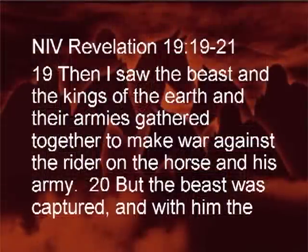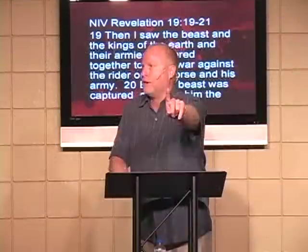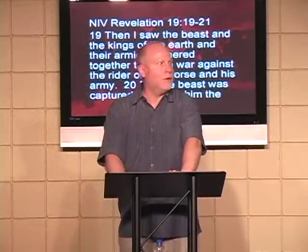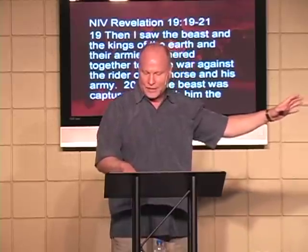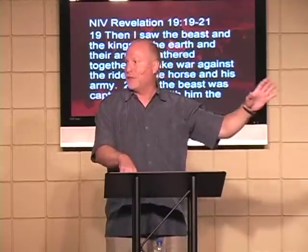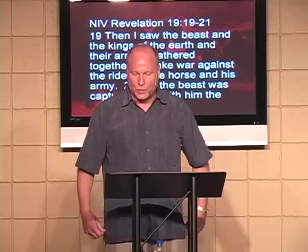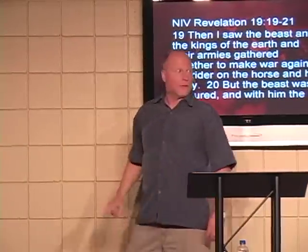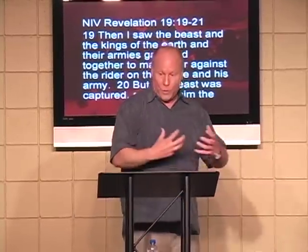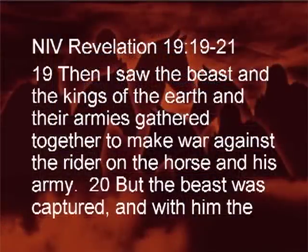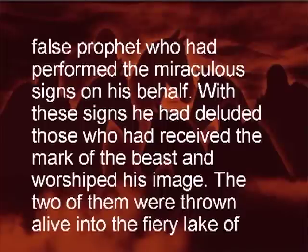Revelation 19:19-21: 'Then I saw the beast and the kings of the earth and their armies gathered to make war against the rider on the horse and his army.' He's referring to the Antichrist as the beast, and the kings are the ten kings — they gathered to make war against Jesus. 'The beast was captured and with him the false prophet who had performed miraculous signs on his behalf, with these signs he had deluded those who received the mark of the beast and worshipped his image. These two were thrown alive into the fiery lake of burning sulfur. The rest were killed with the sword that came out of the mouth of the rider on the horse.'